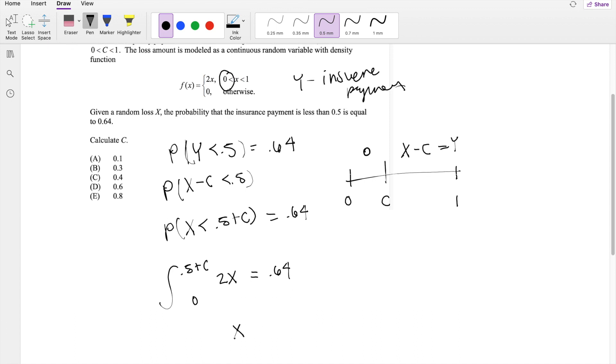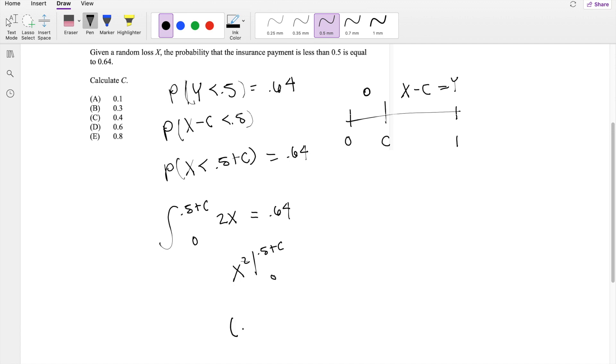So you get x squared with the upper limit being 0.5 plus C and lower limit being 0. When you plug in the upper limit, you get 0.5 plus C squared minus 0 is equal to 0.64.